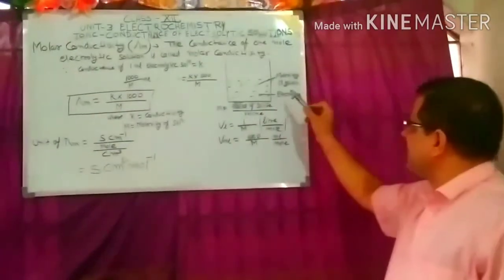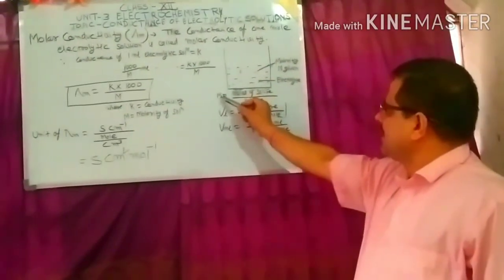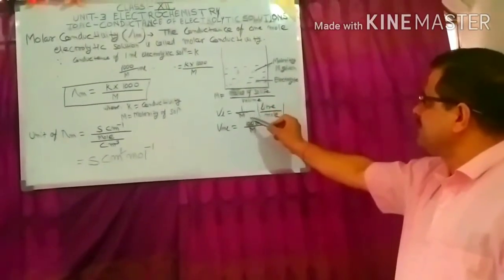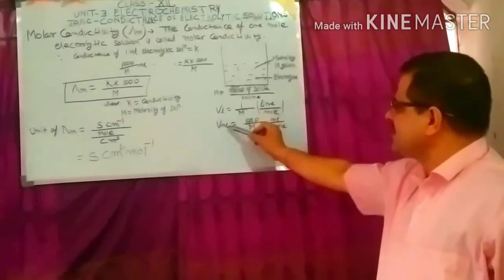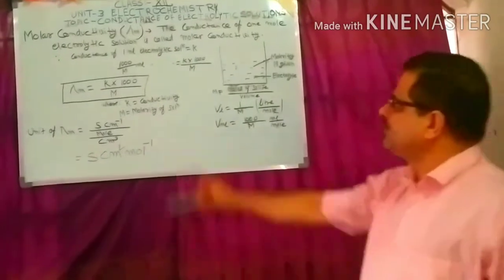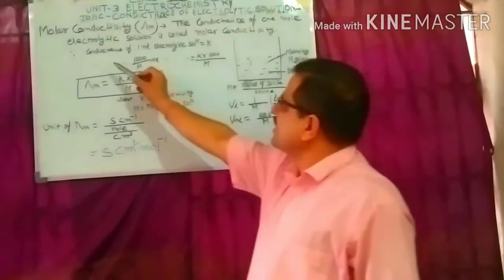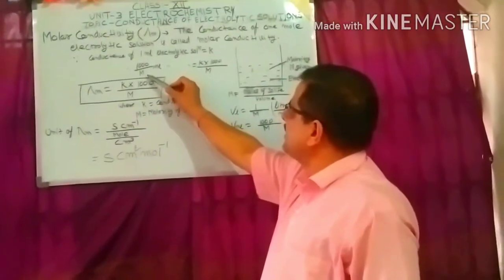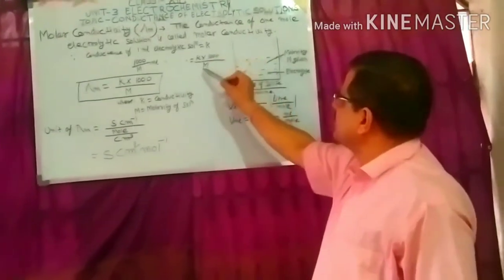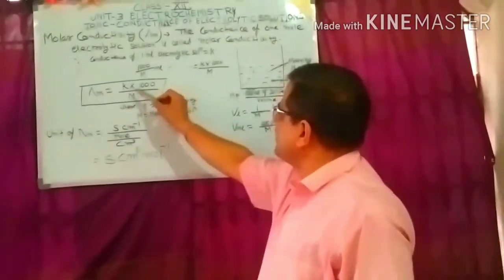Molar conductivity is the conductance of one mole of electrolytic solution. Consider an electrolytic solution of given molarity M, where M is moles of solute per liter. Volume in milliliters or cubic centimeters = 1000/M mL per mole. Since conductance of 1 cm³ of electrolytic solution is κ, the conductance of 1000/M cm³ is κ × 1000/M. Thus, molar conductivity λM = κ × 1000/M.